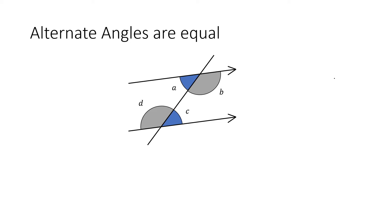So, types of parallel line angles. Please copy down the first example for every different angle type we go through. Alternate angles are equal. Have a look at this pair of parallel lines — the ones with the arrows. You can tell which ones are parallel because they've got arrows going in the same direction. The angles are colour coordinated, so angle A and angle C are equal, and angle B and angle D are equal.